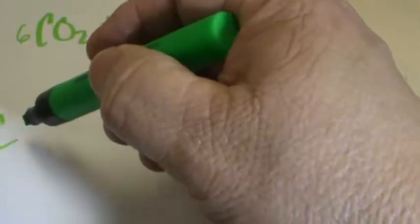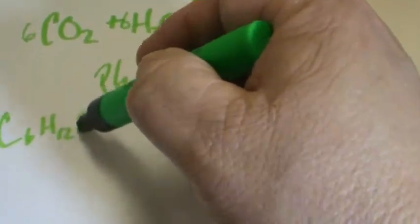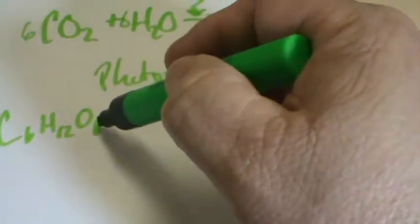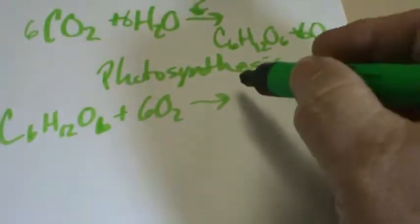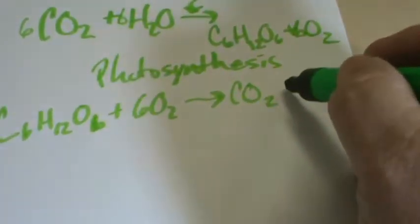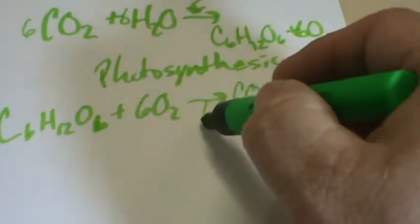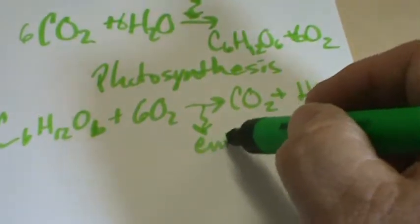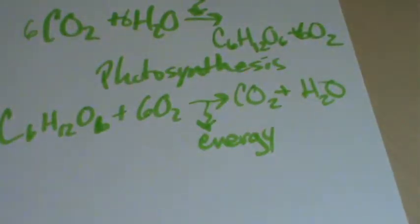Now, respiration — which is what you and I do — is exactly the opposite. We're going to take our sugar, C6H12O6, plus six oxygens, and we're going to create carbon dioxide and water. In the process, we're going to give off energy in the form of heat and muscle movements that keep all of our organs going.